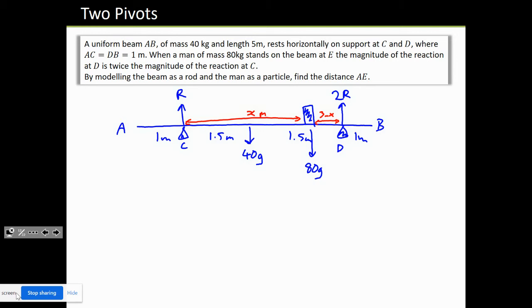Vertically we have 3R in total as reaction forces, and our weight in total is 40g plus 80g, so that's 120g downwards, minus 120g. Because we're balanced, that equals 0. We can get the value of our reaction force: 3R is 120g, so our reaction force is 40g. This is 40g, and this is 80g.